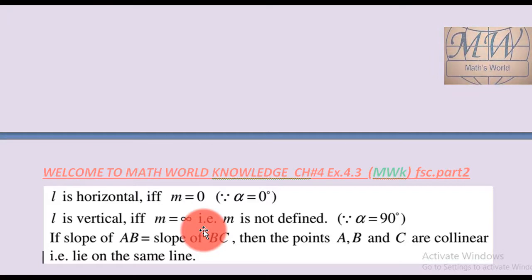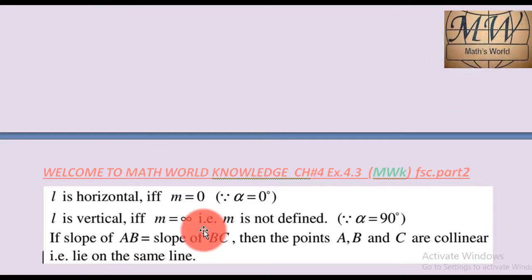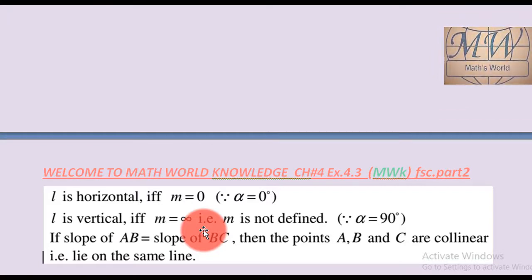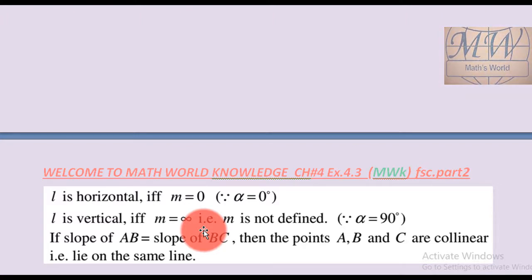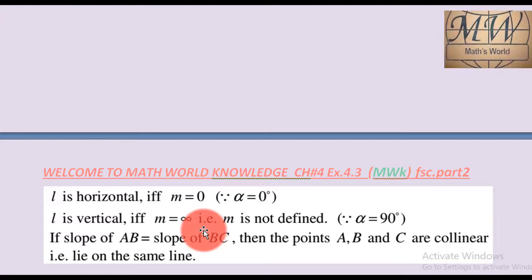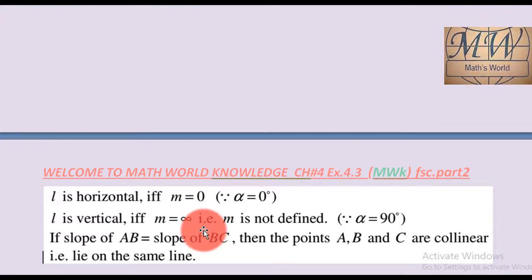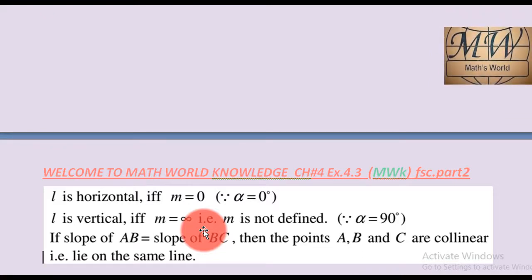Collinear - those points which lie on the same line are called collinear. Today students, we have three points A, B and C.